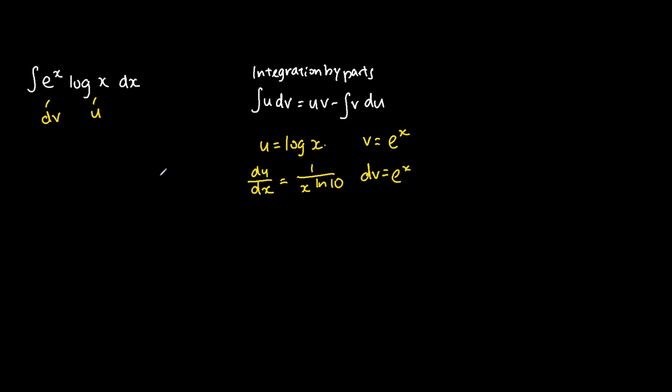Alright, so now we know my u, my v, my du over dx which is my du, and my dv itself is e to the power of x. We can actually substitute into the equation to find out what is the equation after integration by parts. So my u is log x, my v is e to the power of x. We have e to the power of x log x minus away my du itself is 1 over x ln 10, my v is just basically e to the power of x, and of course we have dx.